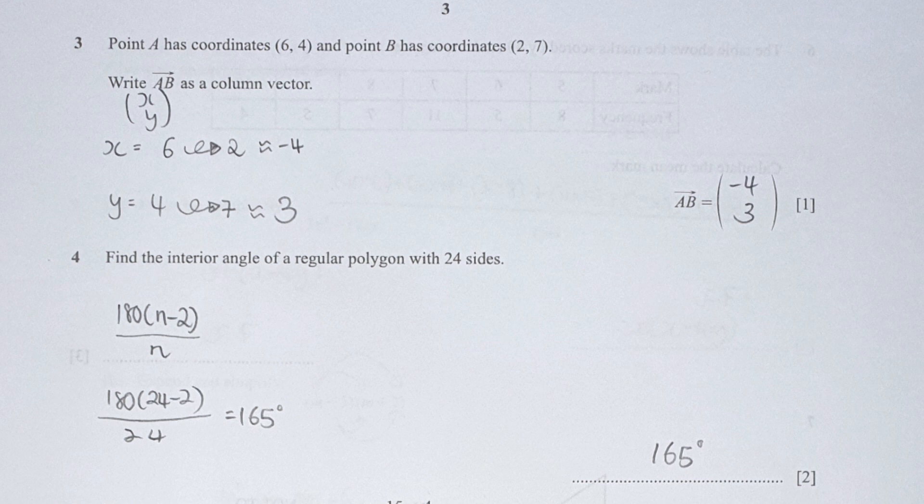Question 4: Find the interior angles of a regular polygon with 24 sides. I take 180(n-2), which finds the total interior angle. However, they only want one interior angle, so I divide it by n. Substitute 24 into n's position, and you get 165.